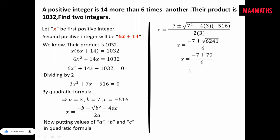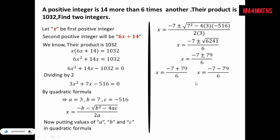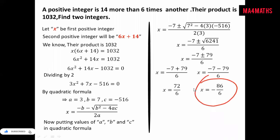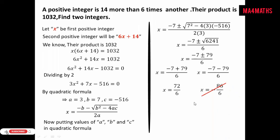Further simplification gives us two cases — one with the plus sign and one with the negative sign: x equals minus 7 plus 79 over 6, or x equals minus 7 minus 79 over 6. We cannot use the negative value since we need positive integers. Going with the positive value: 72 divided by 6 gives x equals 12.